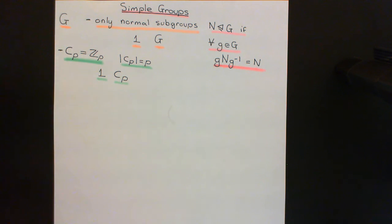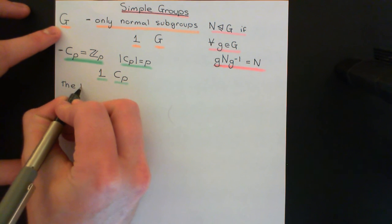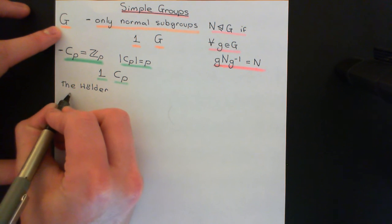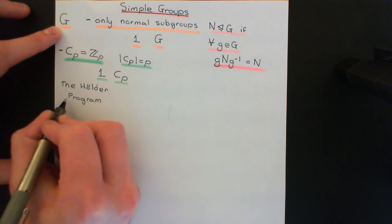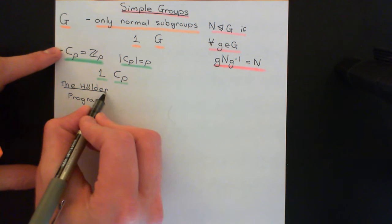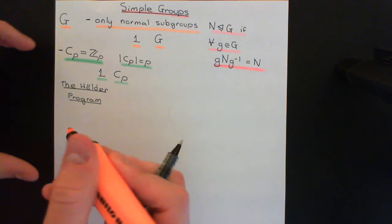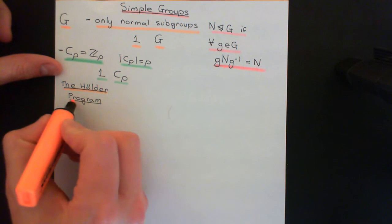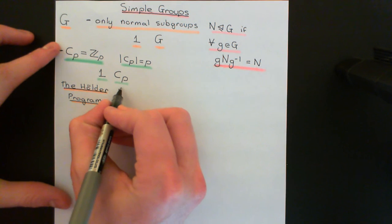To end this video, I want to tell you about something called the Hölder Program. The Hölder Program was a great objective in mathematics — a great aim for mathematicians in finite group theory to work towards. It had two great objectives.